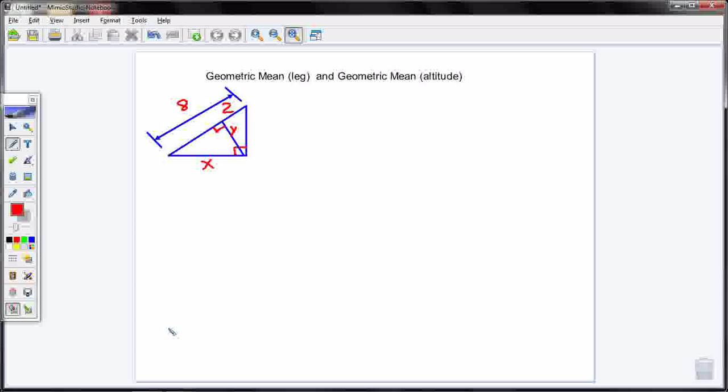Okay, so we're going to do a problem here. We're going to solve for different sides using the geometric mean leg theorem and the geometric mean altitude theorem.